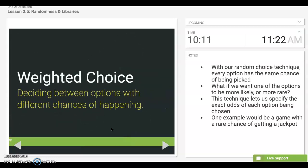So weighted choice means we're deciding between options that have different chances of happening. When something's purely random, every option has the same chance of being picked. Weighted choice comes into effect when we want one or more options to have a larger or smaller probability of being chosen.